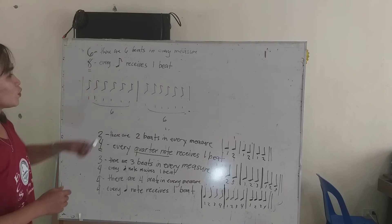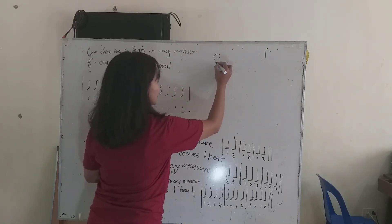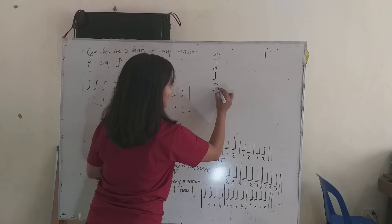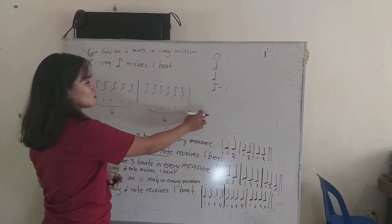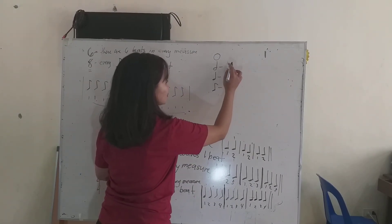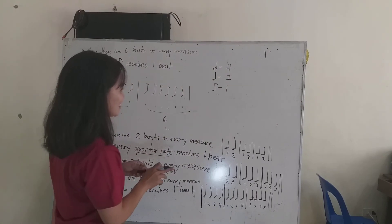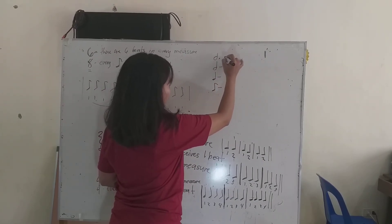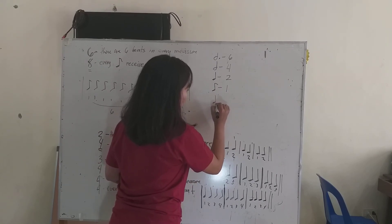Kung ang 8th note receives 1 beat, ilan na ngayon ang bilang ng quarter note? Sa 6/8, magbabago na ang value ng mga notes. 8th note receives 1 beat, kung ang 8th note magre-receive ng 1 beat, ang quarter note na ngayon ay magre-receive ng 2 beats. Ang half note ay magre-receive ng 4 beats. Walang whole note sa 6/8. Ano yung magre-receive ng 6 beats? Dotted half note. At ang magre-receive ng 3 beats ay dotted quarter note.